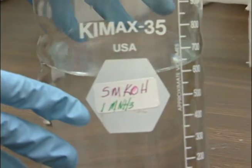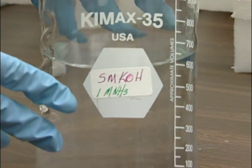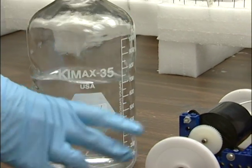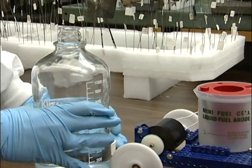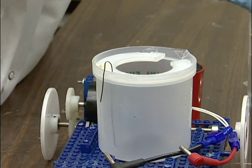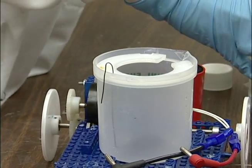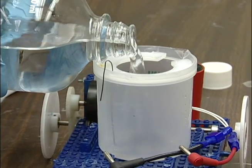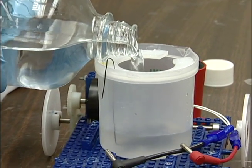The electrolyte we have right here is five molar potassium hydroxide and one molar ammonium. What we do is that we fill the container of the fuel cell with that liquid and actually we use 65 milliliters of it.